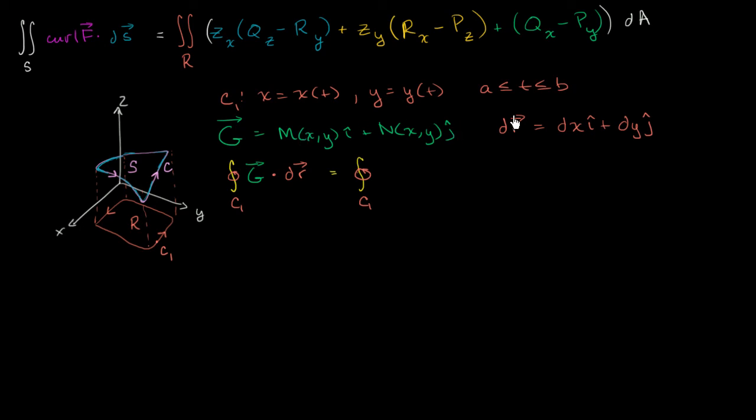But when you take this dot product, you multiply the x components, and then add that to the product of the y components. So you have m times dx plus n times dy. I just took the dot product of g and dr. And when you evaluate these things,